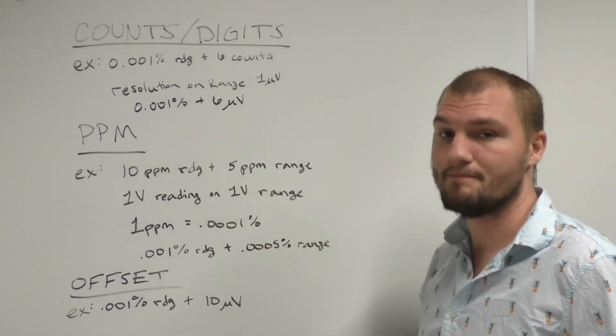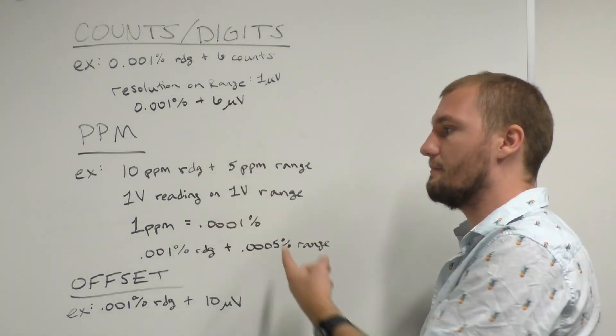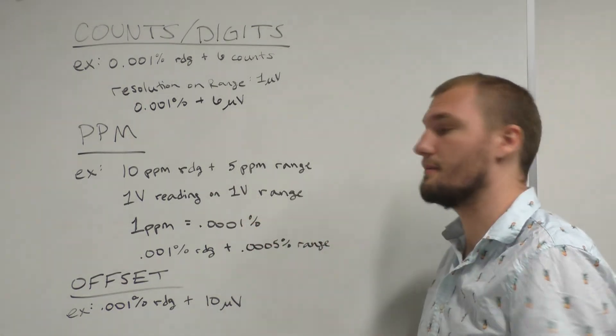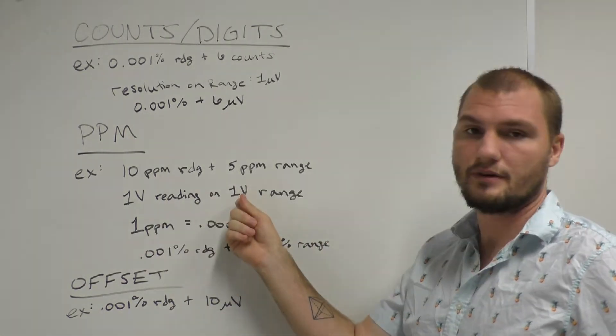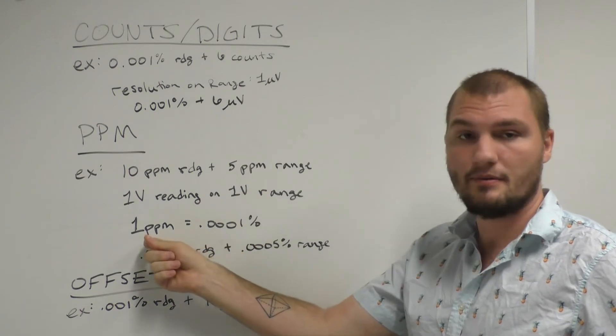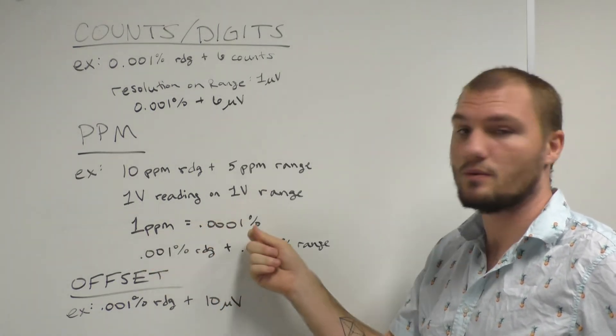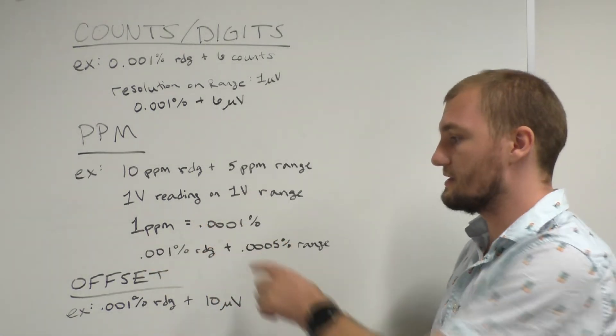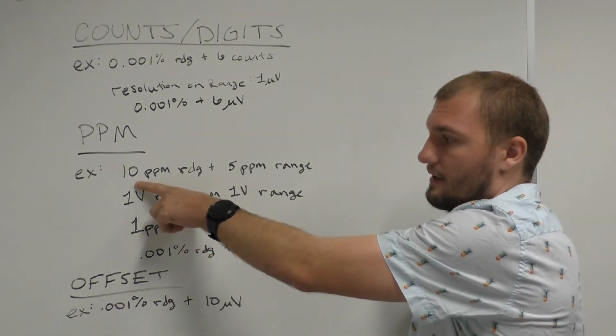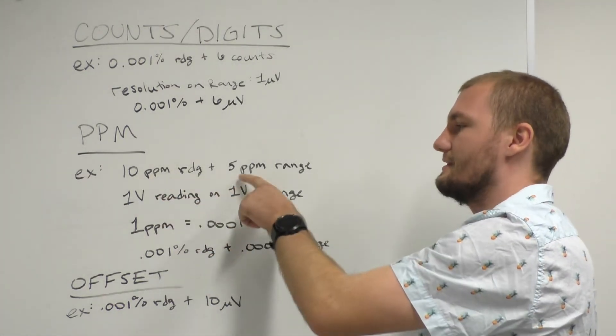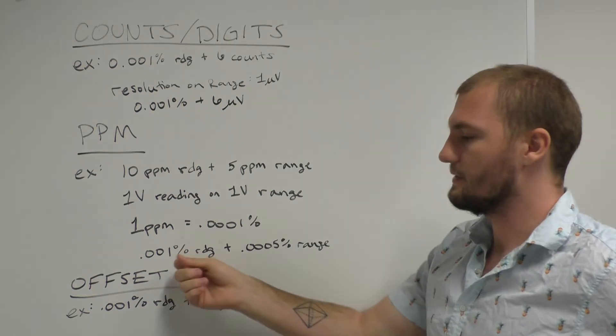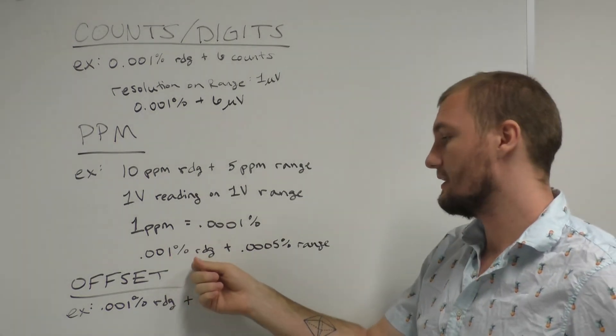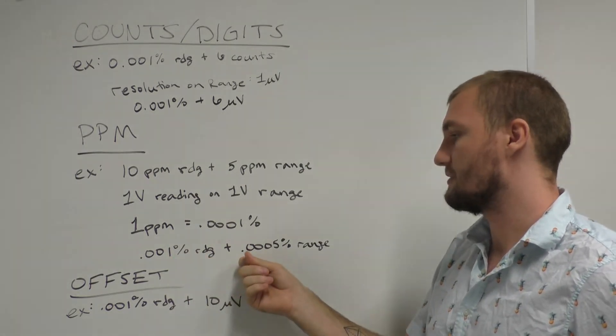Then there's ppm. For this example, we're going to do 10 ppm of the reading plus 5 ppm of the range, and we'll say that it's a 1 volt reading and a 1 volt range. We know that 1 ppm is equal to .0001%, so we just take that percentage and multiply it by the number of ppm's that it specifies, so that we get .001% reading plus .0005% range.